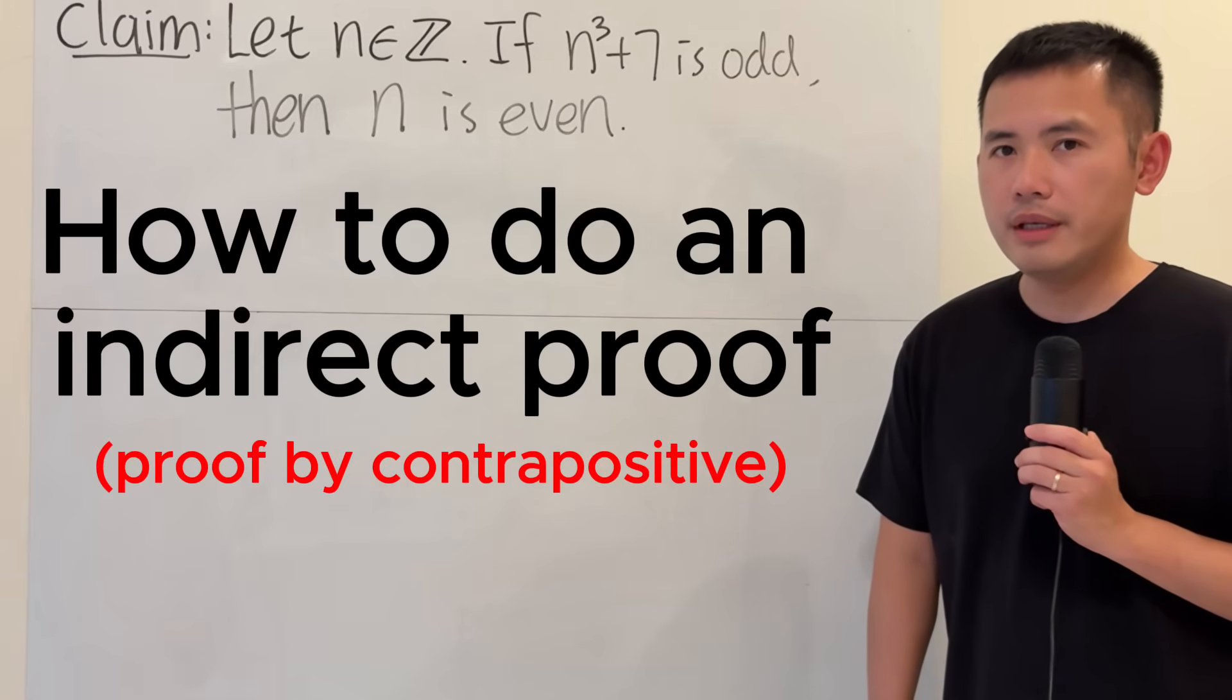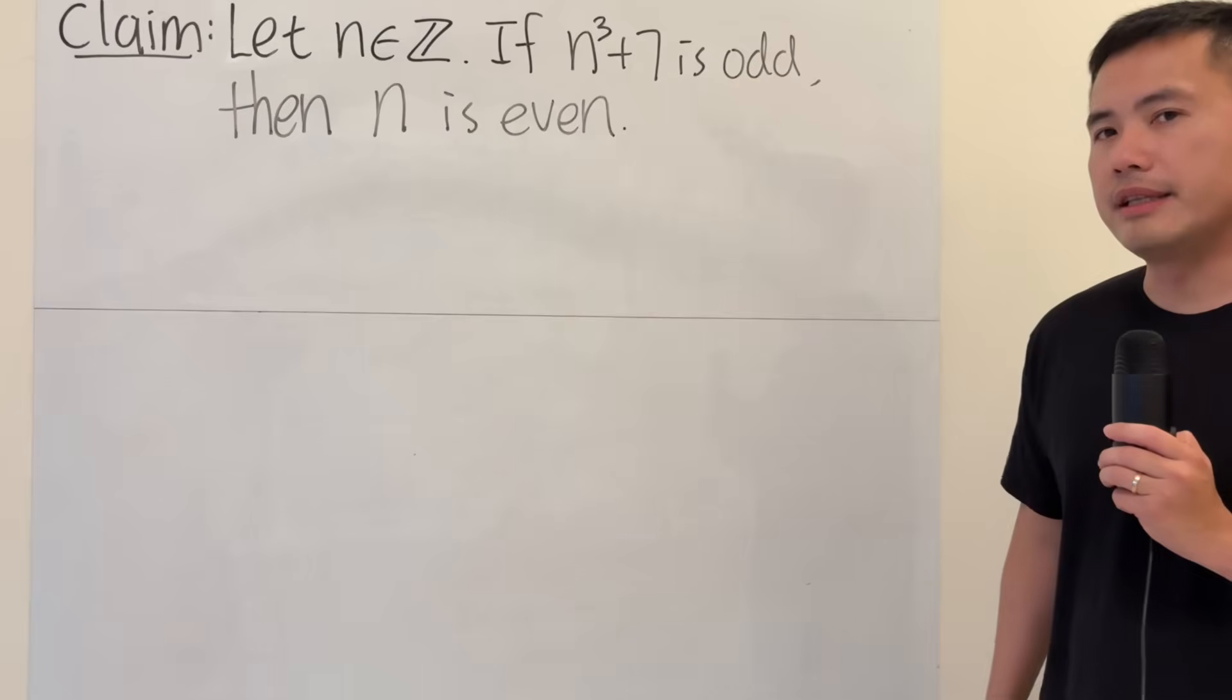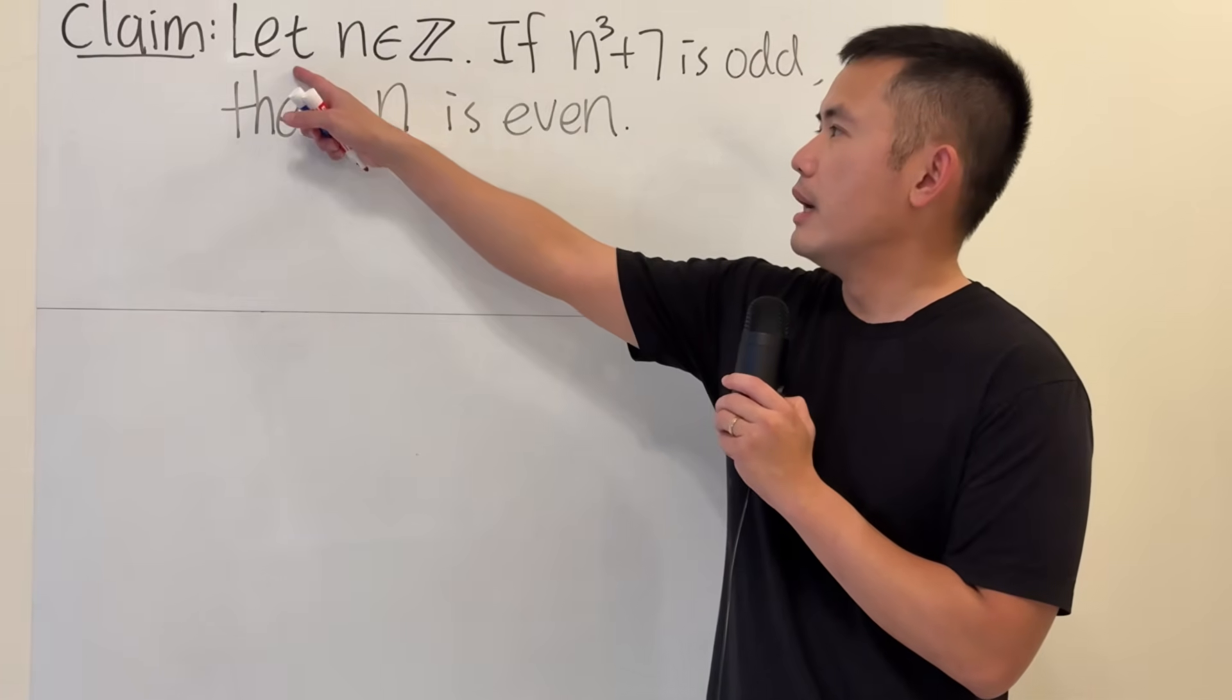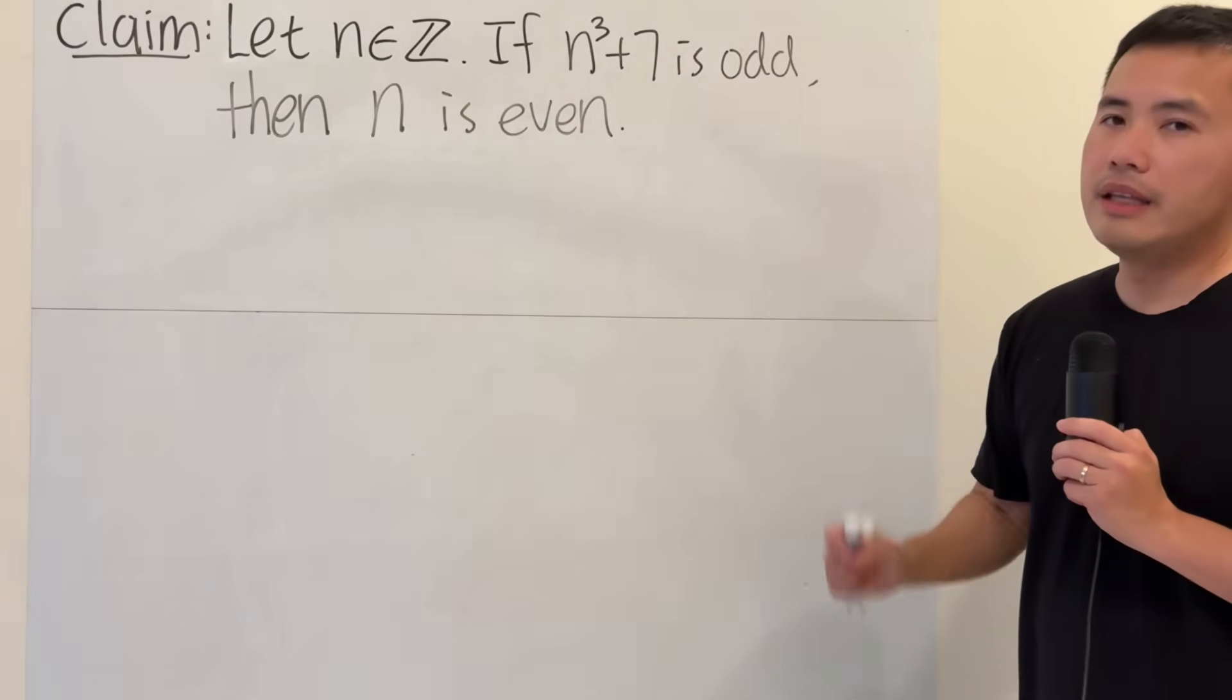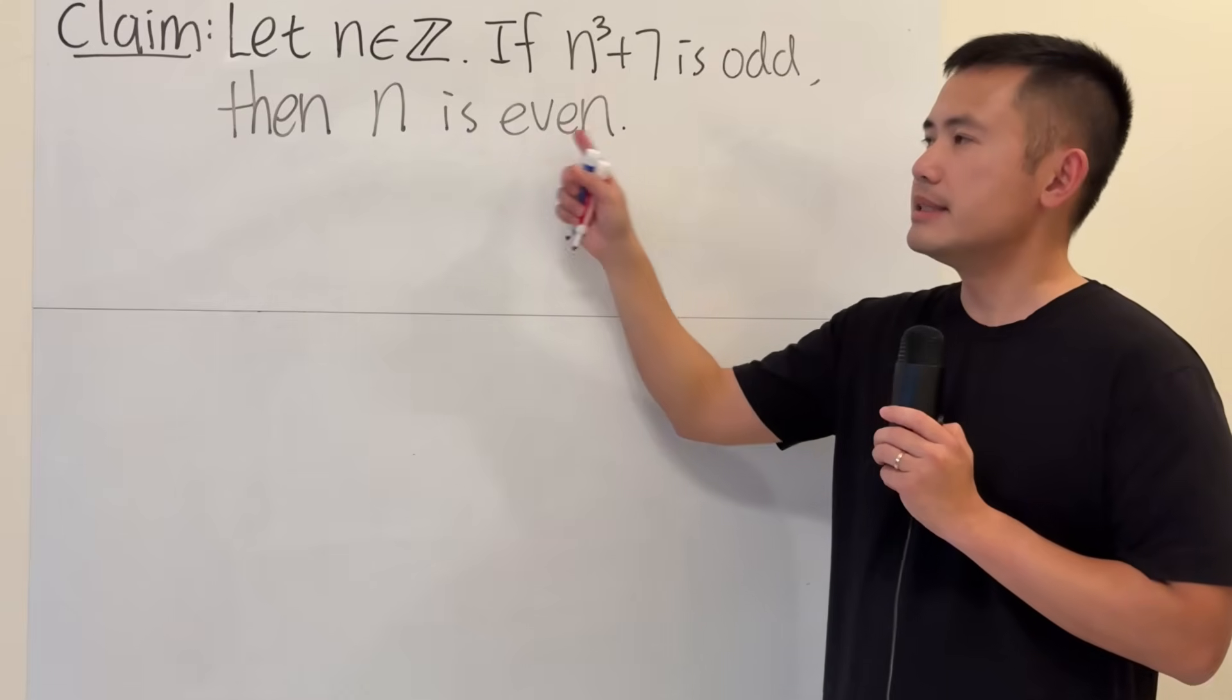Here I will demonstrate how to do an indirect proof, and let's take a look at this claim. Suppose we have n as an integer. If n cubed plus 7 is odd, then we'll try to show that n is even.